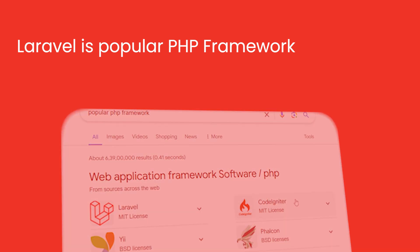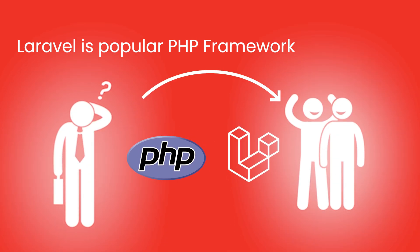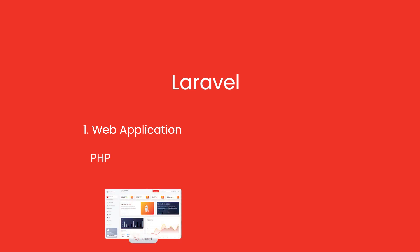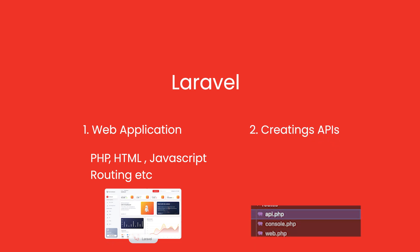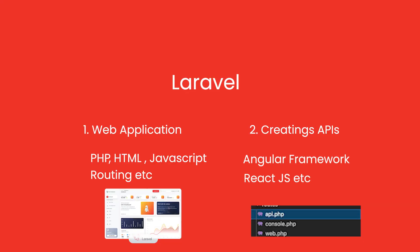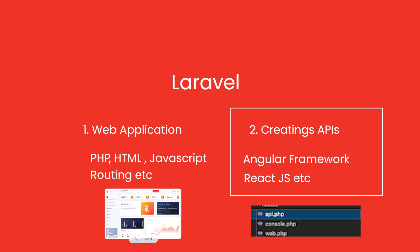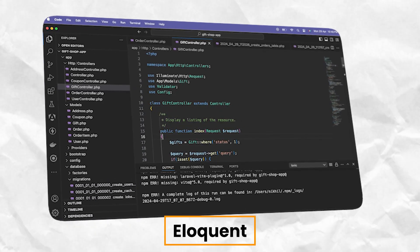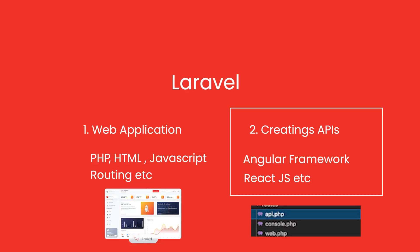Laravel is the most popular PHP framework — if you search it on Google you'll find Laravel at the top. Even if you don't know PHP well, you can still work with Laravel to some extent, because in Laravel you can fulfill two purposes. One is to make web apps using PHP core, HTML, JavaScript, routing, and all other mechanisms in a structured framework. On the other hand, if you just want to use it for creating APIs — for a mobile application, Angular, React JS, or any other front end — you can do that too. In our case we are going to use Laravel for creating APIs.